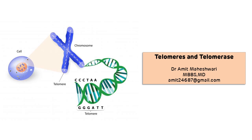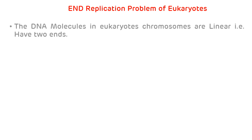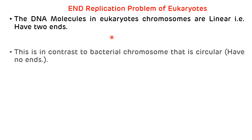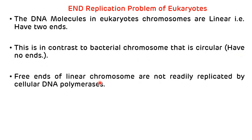This is one of the very important topics for NEET-PG. So, regarding the end replication problem of eukaryotes — as we all know that DNA molecules in eukaryotes chromosomes are linear, which means they have two ends, in contrast to prokaryote chromosomes which are circular and don't have any ends. The free ends of the linear chromosomes are not readily replicated by cellular DNA polymerases.